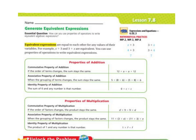The associative property of addition means the grouping of terms changes and the sum stays the same. So here we have 5 plus (a plus b), but over here we take 5 plus 8 and then plus b. The 5 and the 8 are like terms, so we combine those.